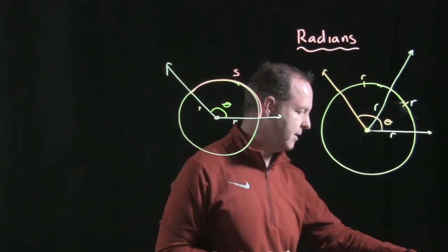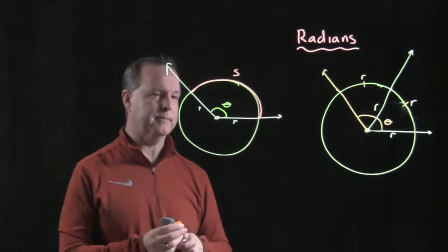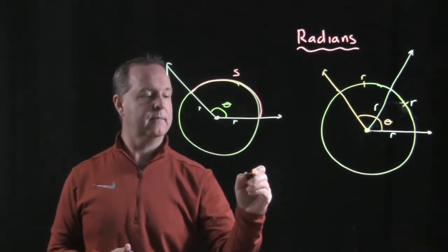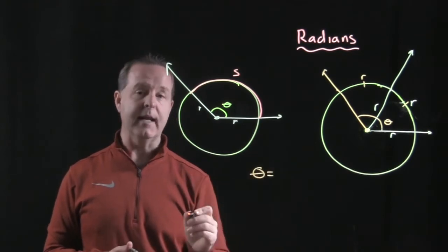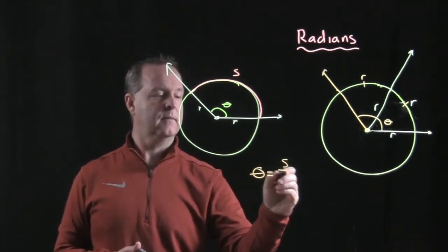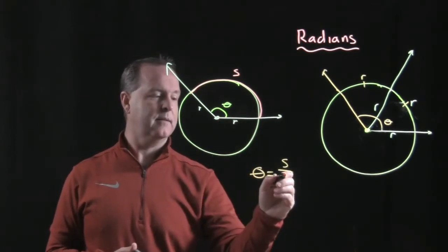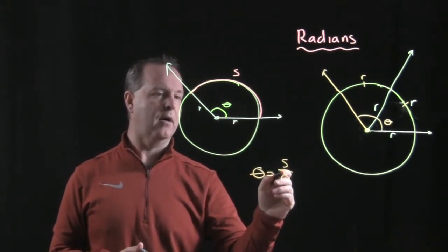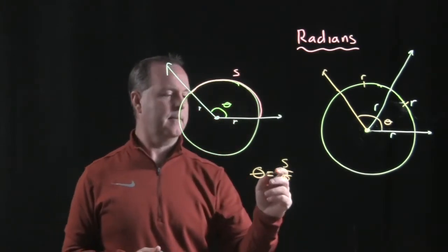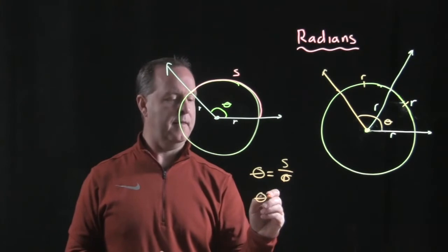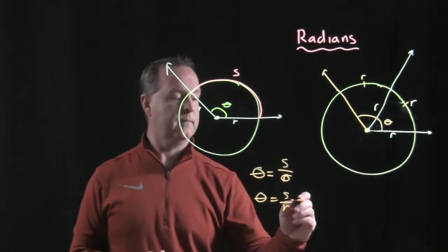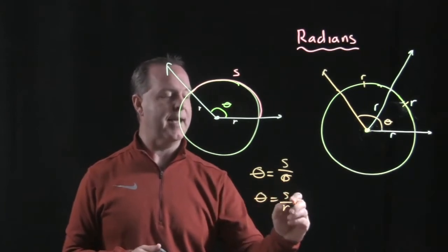All I'm doing right now is doing some labeling. Well, I would describe then that this measure of theta equals the distance of the arc divided by R. Let's write that a little bit better. Theta equals S divided by R, and that would produce, and that's in radians.